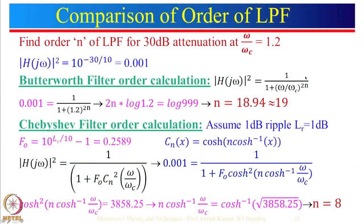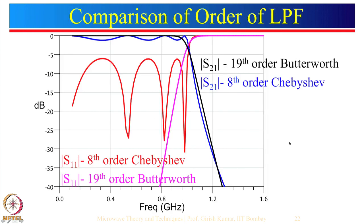In the last lecture we discussed an example of 30 dB attenuation at ω/ωc equal to 1.2. We saw that using a Butterworth filter requires a filter order equal to 19, whereas using 1 dB ripple Chebyshev requires a filter order equal to 8. For 0.5 dB ripple the order would be more than 8 but much less than 19. Here is the response showing both filter realizations: 19th order Butterworth and 8th order Chebyshev.